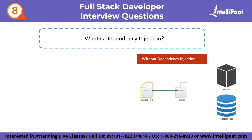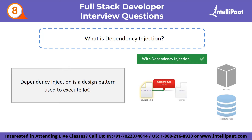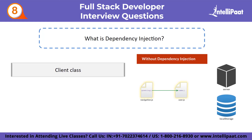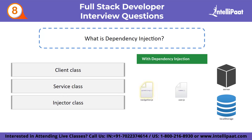Next question: what is dependency injection? Dependency injection is a design pattern used to execute IoC (Inversion of Control). Object injection and object connection are handled by the container rather than the object itself. There are three types of classes involved: first, the client class, which depends on the service class; next, the service class, which provides service to the client class; and finally, the injector class, which injects service class objects into the client class.